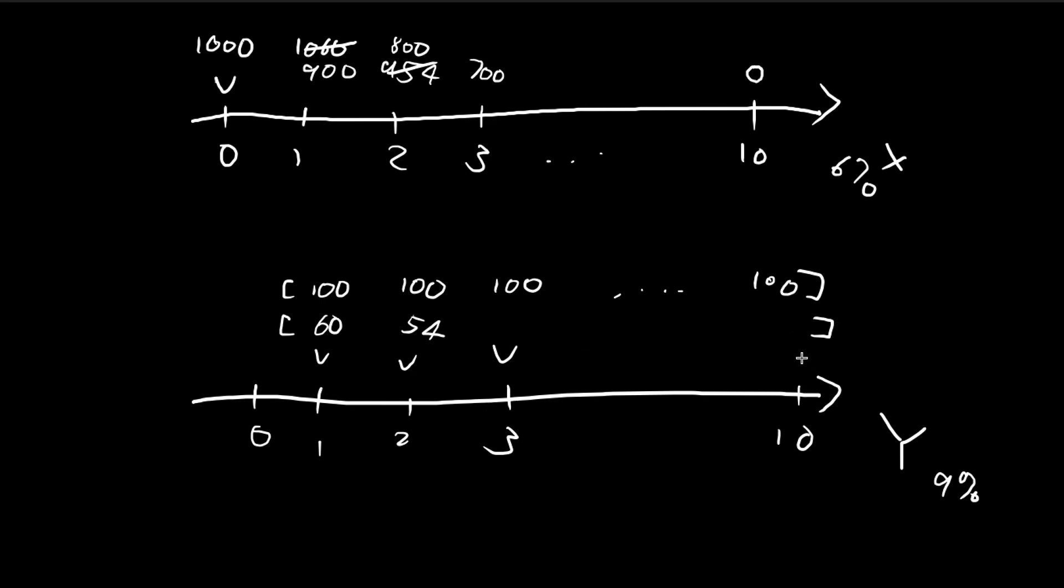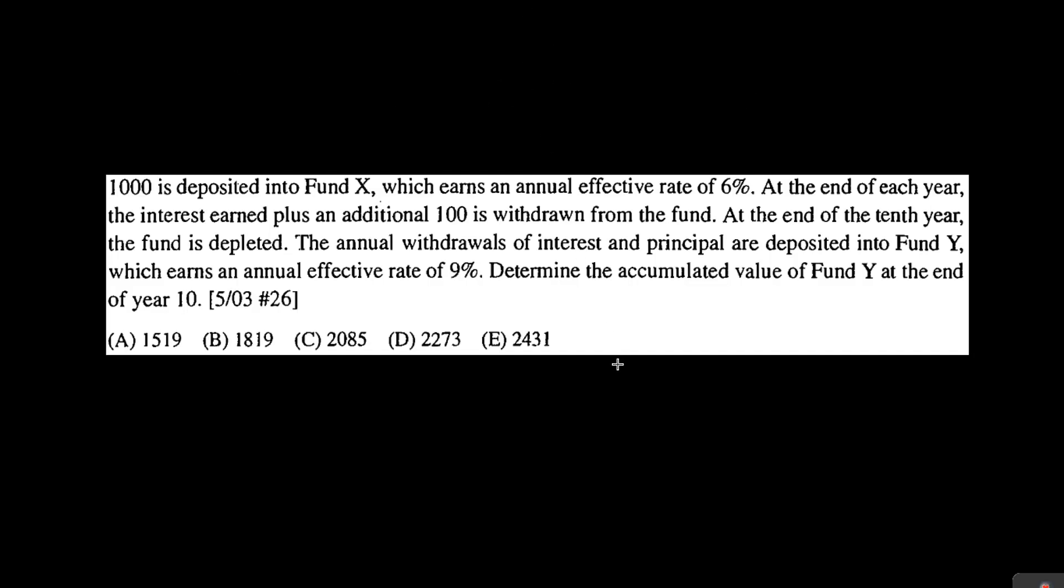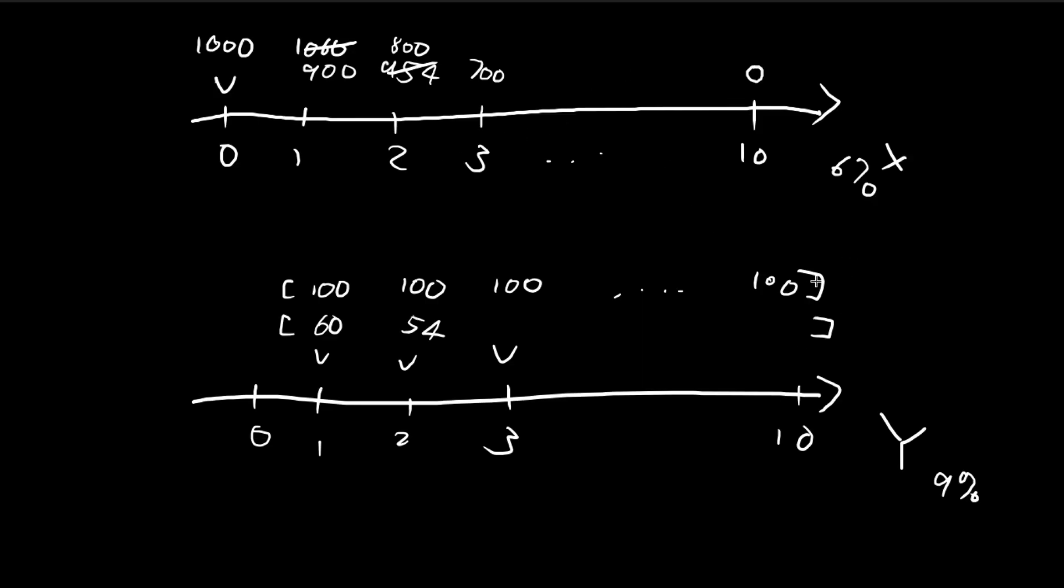So if I'm looking for the accumulated value at time 10, which is what I'm looking for, so the accumulated value of fund Y at the end of year 10. This is this part over here. This is just an annuity immediate.